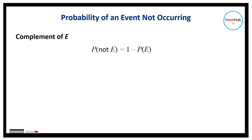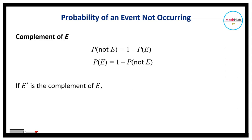Also, the probability that an event E will occur is equal to 1 minus the probability that it will not occur. So P of E is also equal to 1 minus P of not E. Using set notation, if E prime is the complement of E, then P of E prime is equal to 1 minus P of E, and P of E is equal to 1 minus P of E prime.